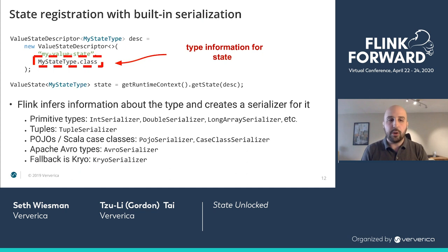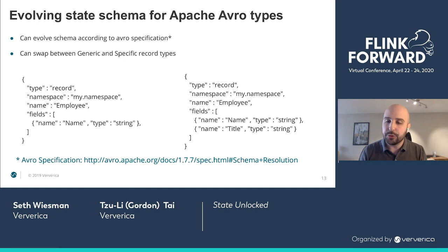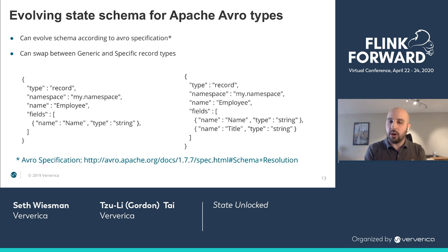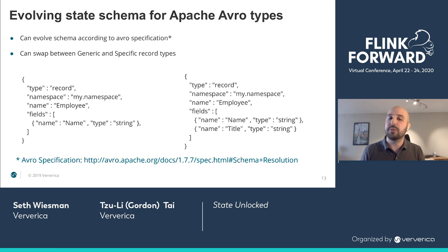As we evolve our application and our state type, if this is an Avro class, Flink supports schema evolution for Avro out of the box. If we have an Employee class storing a name today and tomorrow they also have a job title, this is going to just work. You upgrade your class, redeploy your code, and it will be as if every record has always had a title. The default will be null, or in Avro you can specify a default value. We follow the Avro 1.7.7 schema spec. I generally encourage users to pick Avro in production because it has such well-defined schema migration semantics — you know exactly what you can and cannot do, and it is very easy to reason about.